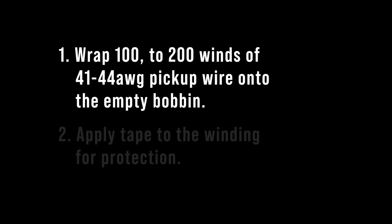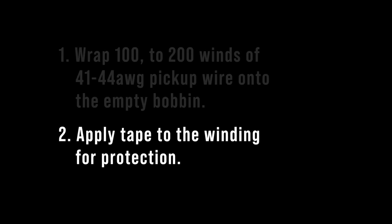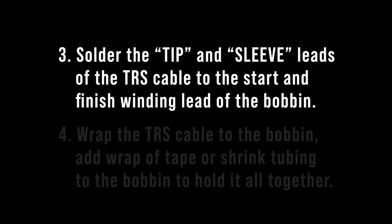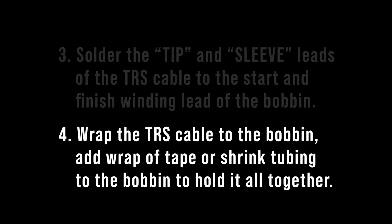Now we're gonna take a look at the recipe. Step one: wrap 100 to 200 winds of 41 to 44 gauge pickup wire onto an empty pickup bobbin. Simple enough. Step two: apply tape to the winding for protection. Step three: solder the tip and sleeve leads of the TRS cable to the start and finish winding lead of the bobbin. Step four: wrap the TRS cable to the bobbin and add wrap of tape or shrink tubing to the bobbin to hold it all together. Pretty simple.